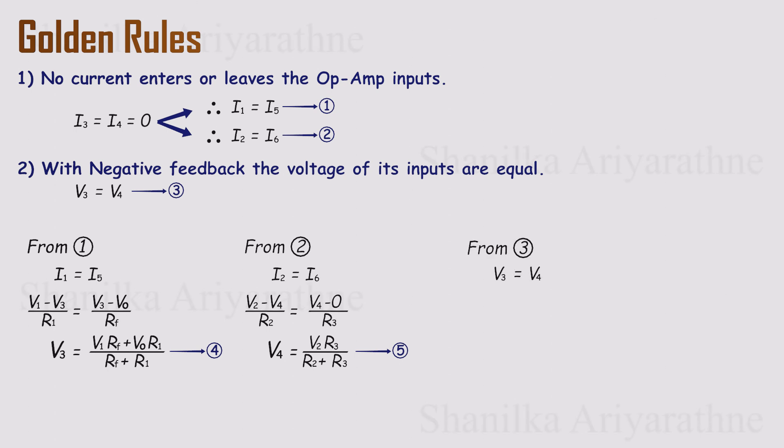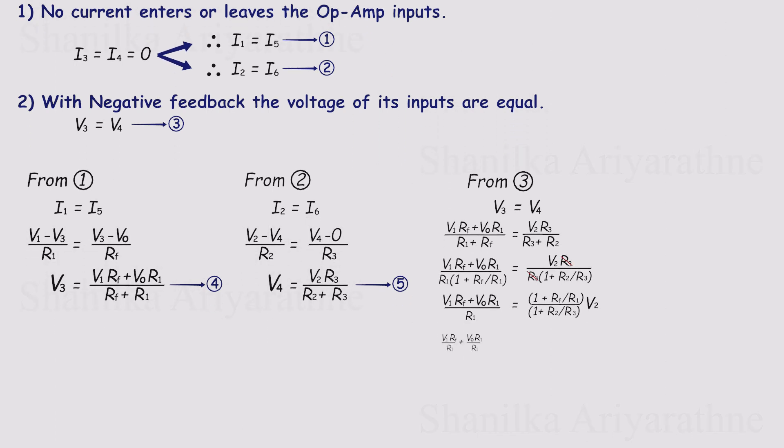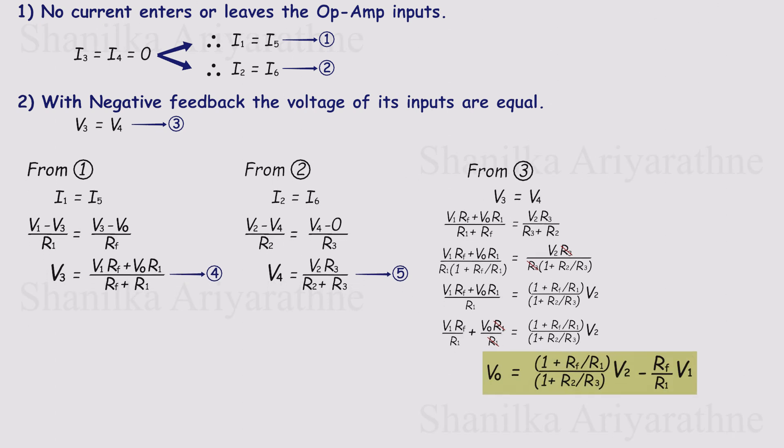Now from equation 3, we know V3 and V4 are equal. So let's take the expressions we found for each and set them equal to one another. At first, the algebra looks a bit messy. Don't stress. Work it step by step and solve for Vout. You'll land on a bulky looking expression, the standard difference amplifier formula, and that's exactly what we want.